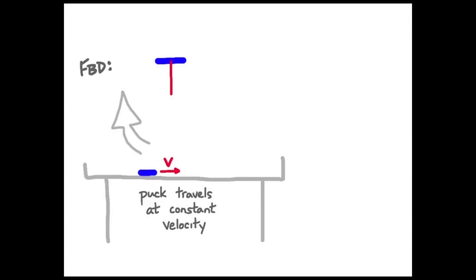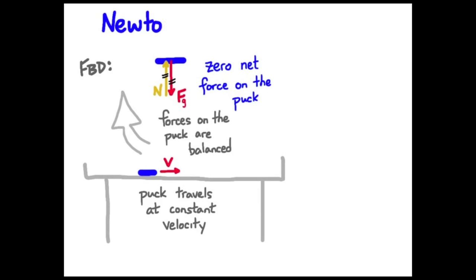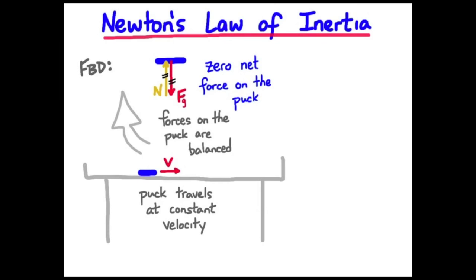So the forces acting on the puck are, again, force of gravity pulling down and the desktop pushing up on the puck. Those forces are equal in magnitude, opposite in direction. So the forces on the puck are balanced. And we say there is zero net force on the puck. So in this case, we have balanced forces again, but our object is not at rest. It is traveling at constant velocity.